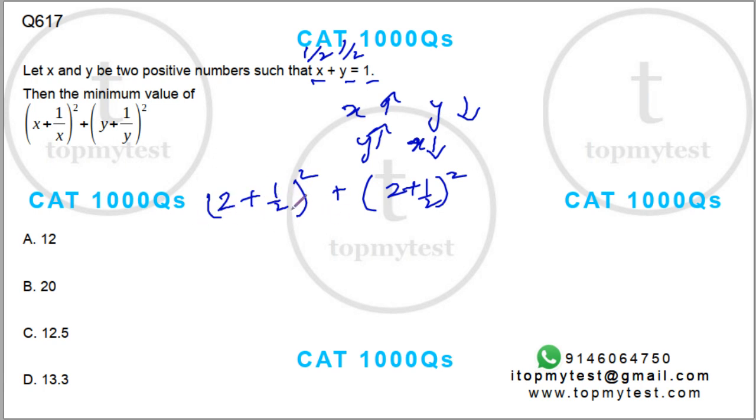So this is 5 by 2 squared. 5 by 2 squared will be 25 by 4 plus 25 by 4. That will be 25 by 2, or 12 and a half.